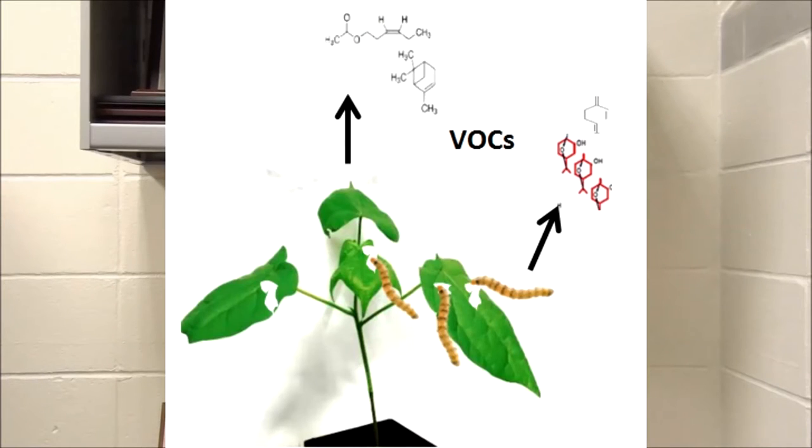When herbivorous insects feed on plants, they retain some plant chemicals and can even emit some of these volatile compounds from their body. Parasitic wasps, also called parasitoids, exploit these volatiles as odor cues to find their herbivore hosts. In nature, such odor cues are often emitted as a blend of various compounds.